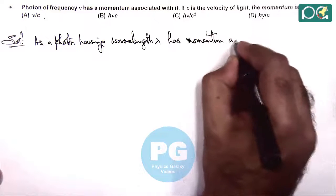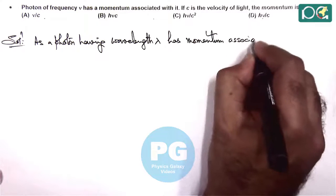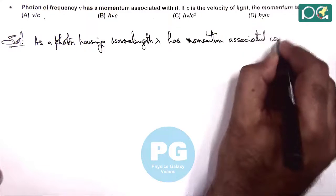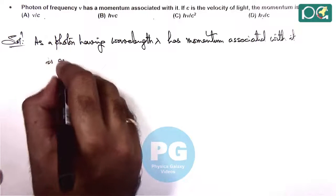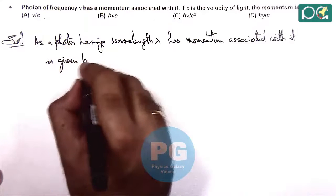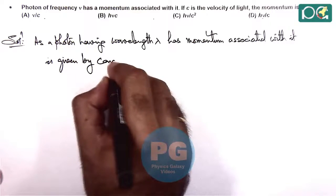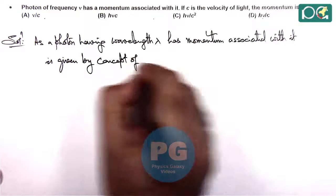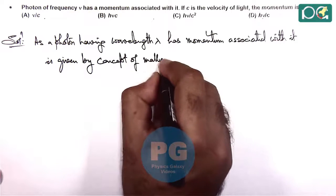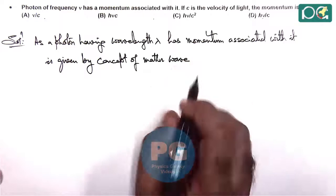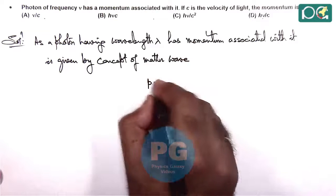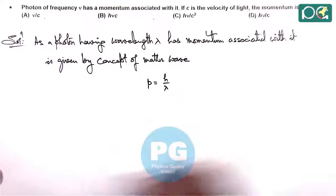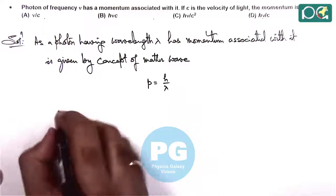This is given by concept of matter waves that we already discussed in theory. A photon having wavelength lambda, the momentum associated with it is given by h by lambda.